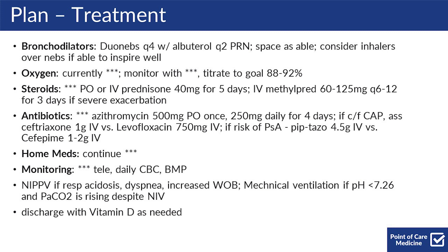Also be thinking about bronchodilators. In general, treat with duonebs Q4 with albuterol Q2 PRN, and be able to space that depending on how the patient does. You should also be thinking about switching them over to inhalers over nebs if they're able to inspire well. We'll talk more about the data behind that later.